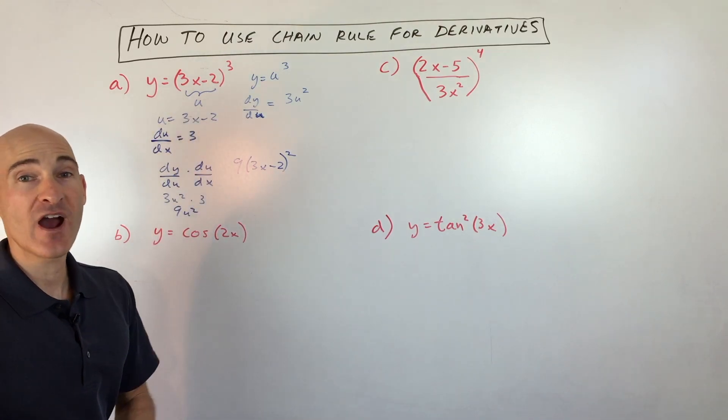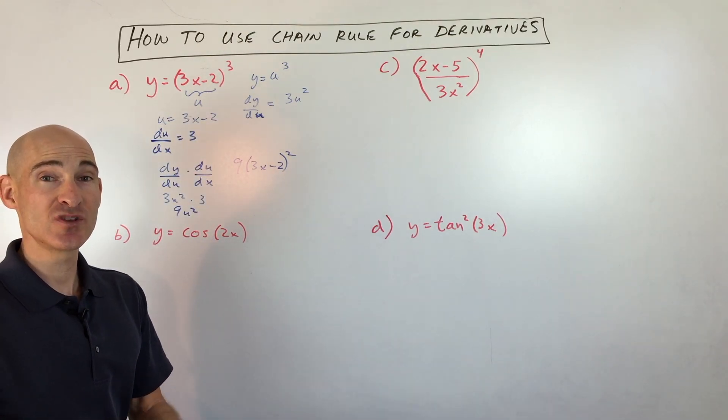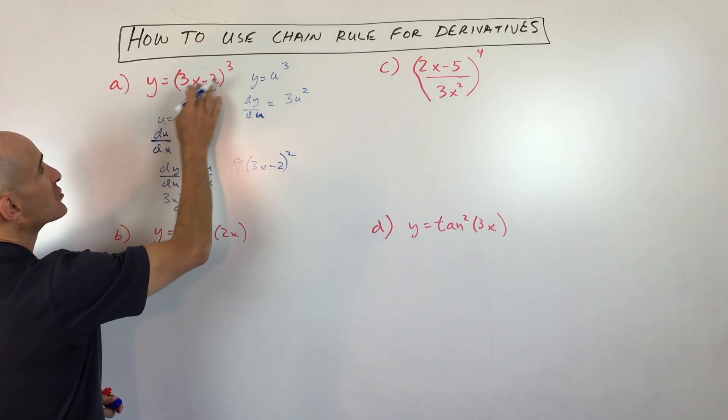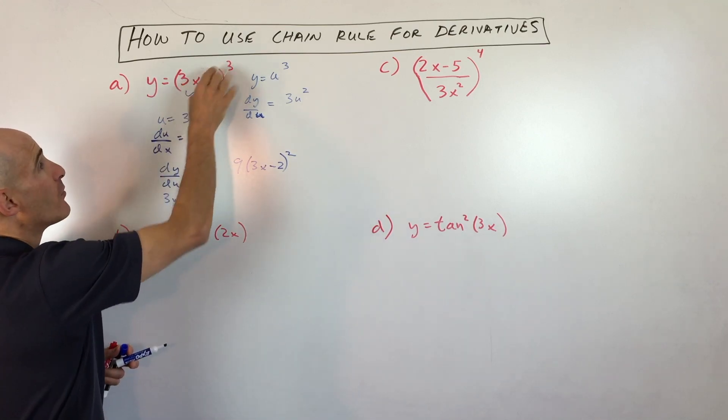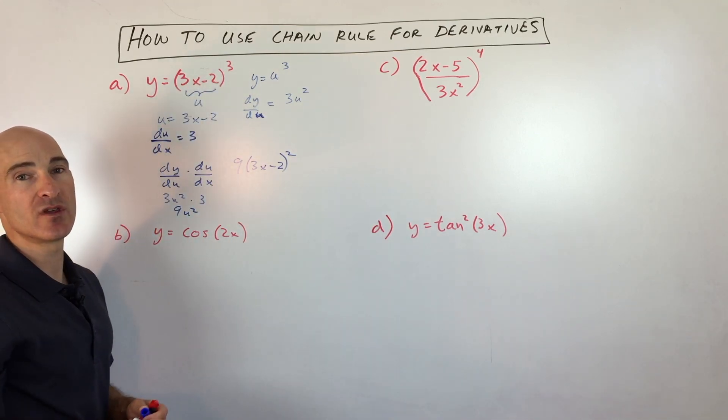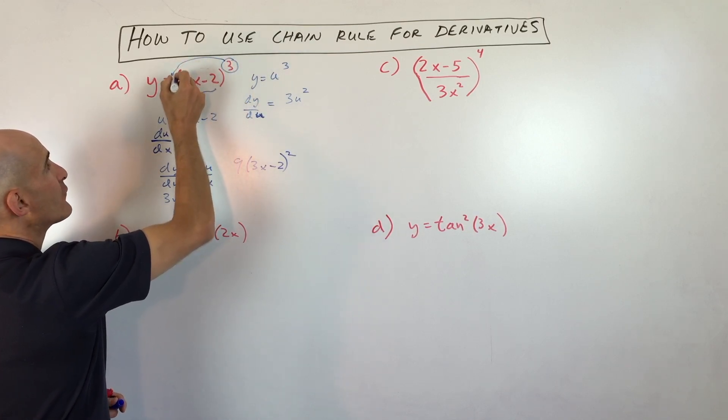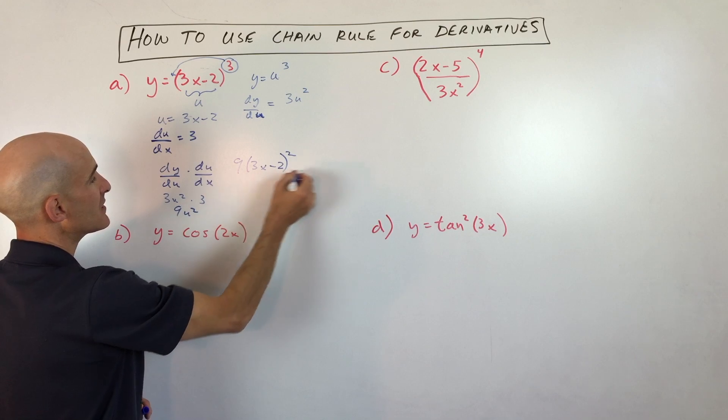Now that was kind of a long process. As you do this more and more, you're just going to do the shortcut. You're going to realize that you're taking a quantity to a power. So you just do the power rule: take the exponent, bring it down in front, and subtract 1.